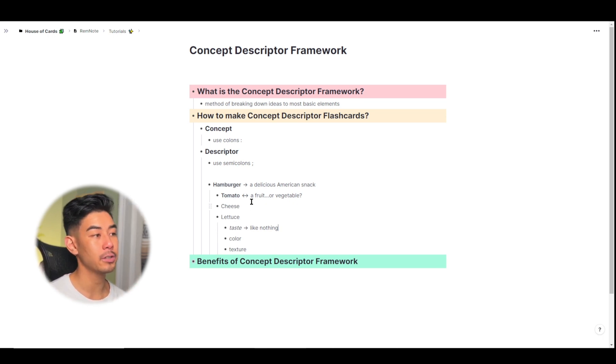These bold and italicized conventions just differentiate descriptor and concept flashcards. And just like for basic flashcards, remember that you can make flashcards that go forwards, backwards, or both. So for example, let's make a backwards-only descriptor flashcard. I will use a semicolon followed by a less-than angle bracket.